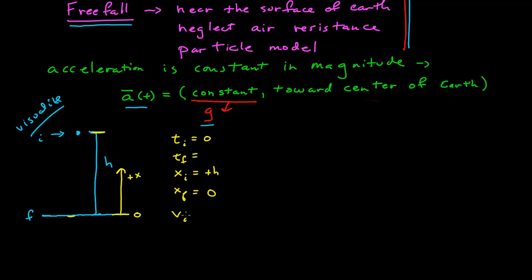The initial velocity is when the ball is initially released — in the x-direction, that's zero. The final velocity, when it hits the ground, is what I'm trying to find. I also know that the acceleration in the x-axis has a magnitude of g. It's a vector pointing toward the direction of the earth, which in this case is down, along the negative x-axis. So the acceleration is negative g.